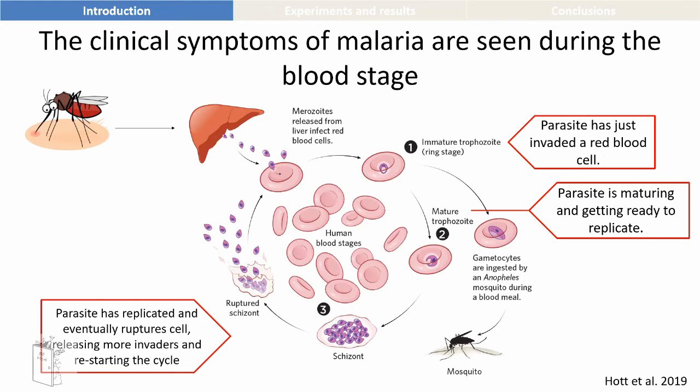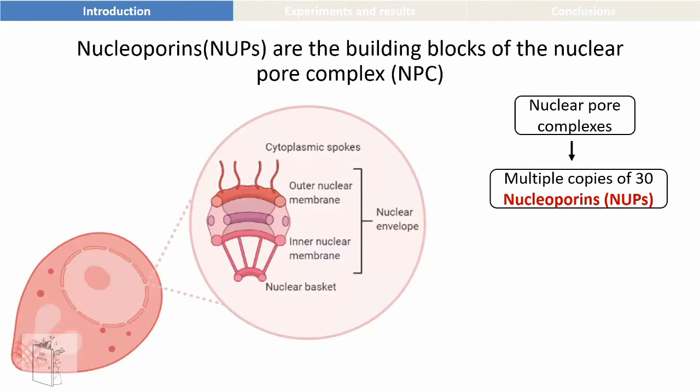A lot of the drugs and diagnostic tests are aimed at this particular stage of the parasite. Why am I talking to you about malaria when I said I was going to talk about the gatekeepers of the nucleus? Because we are trying to understand what are the gatekeepers of the nucleus in this parasite so that we can finally find good targets for vaccines. So let me talk to you a little bit about nuclear membranes and nuclear pores and what they are.